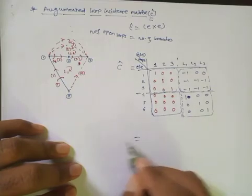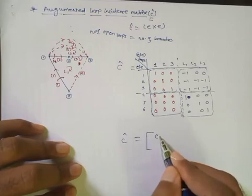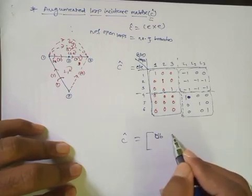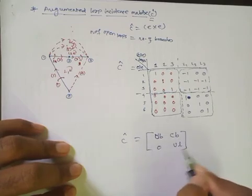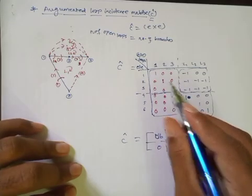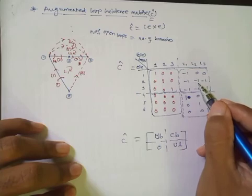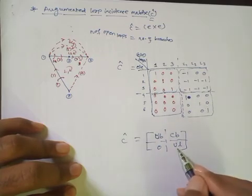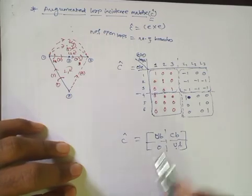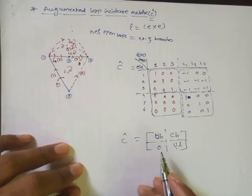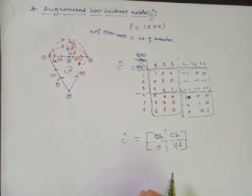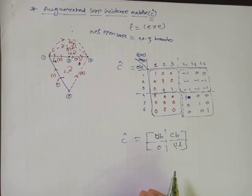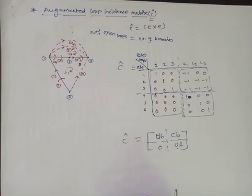We can write the C-cap matrix as composed of sub-matrices UB, CB, zero, and UL. UB is the three by three unity matrix corresponding to branches, CB is the part of matrix C corresponding to branches, the lower-left is the zero matrix, and UL is the unity matrix corresponding to the links. In this way, by considering any oriented network graph, we can form these different matrices which are analogous to electrical laws and can be used for analysis purposes.